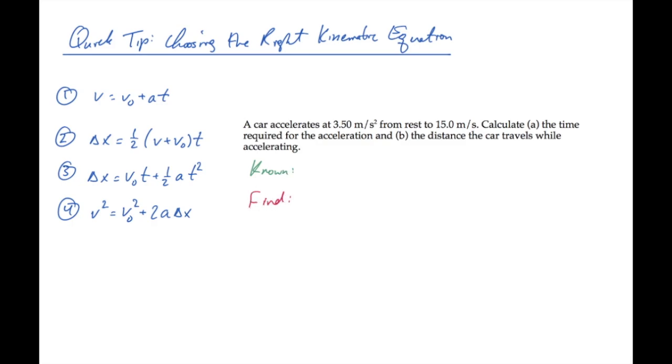As we read through this problem statement, the known quantities are first the acceleration, 3.5 meters per second squared. The car starts from rest, that tells us the initial velocity is zero, and it ends up with a velocity of 15 meters per second, that's the final velocity.